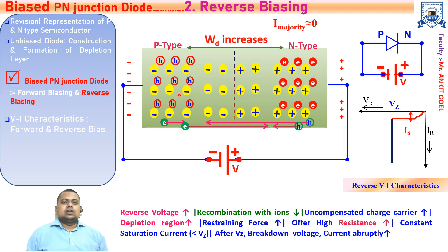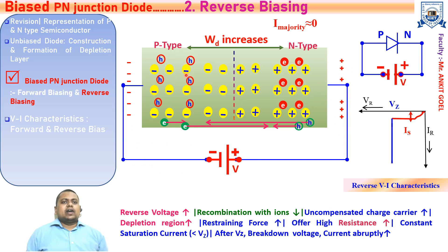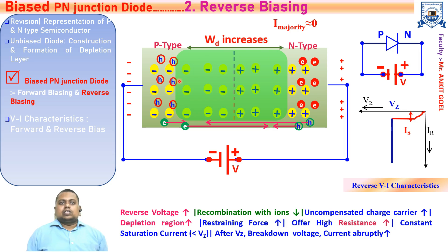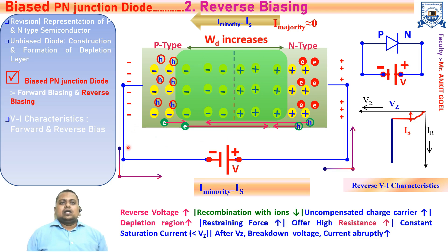Let us discuss the majority carriers and what happens to them when reverse bias is established. The holes are in the positive potential region and the electrons are there. The negative potential will attract these holes and absorb them — as you can see, this will widen the depletion layer. The depletion width increases effectively in the reverse bias condition, and this increase in depletion width increases the restraining force or barrier potential, making it hard for the diffusion process and the flow of majority carriers. The high electric field region supports minority carrier currents — electrons are attracted by the positive potential and holes by the negative potential — giving a minority current in the anticlockwise direction.